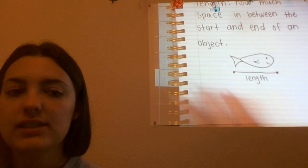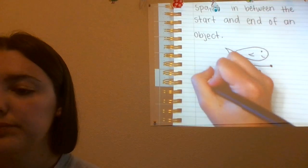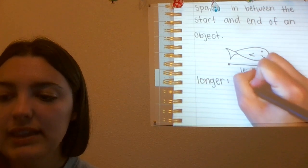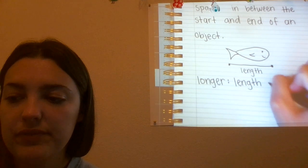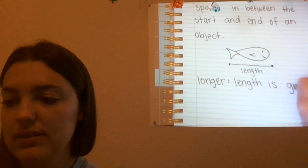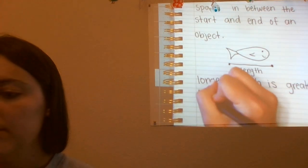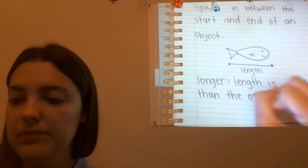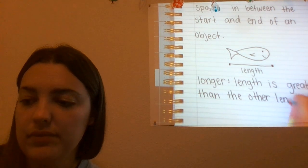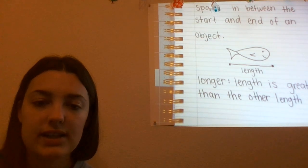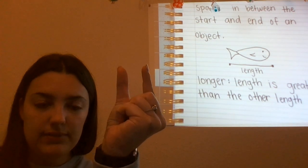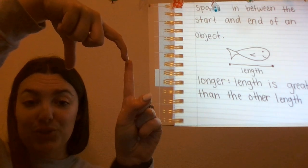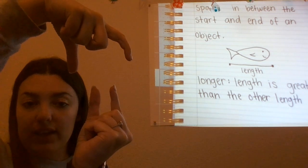So when something is longer than something else, that means its length is greater than the other length. If I'm comparing two objects and one fish is this long and another fish is this long, the one with more space between its start and end is longer, so its length is greater. If your length is greater, that means you're longer than the other object.